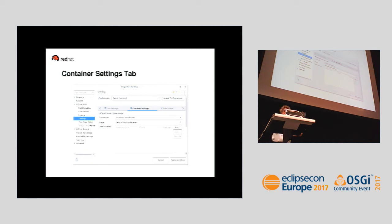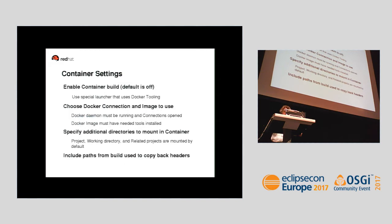At the bottom there's also a data volume option. It's possible that your build may require some additional directories that are not in your C project or related projects — for example, an XML file used during the build. You can bring that in so the build will work as it should. So to recap: you enable the container build, choose your Docker connection, the Docker image must have the needed tools installed, and then you can specify additional directories.